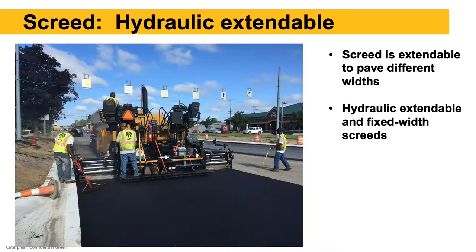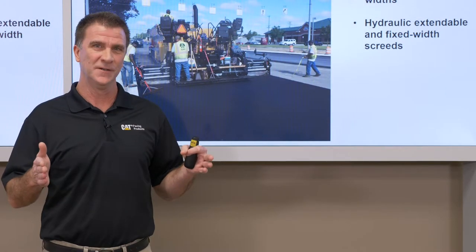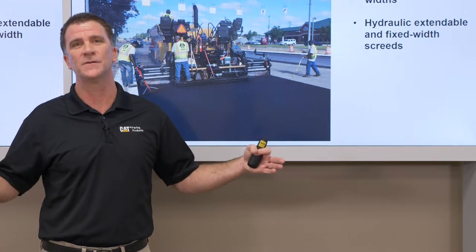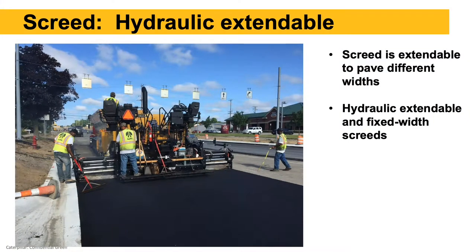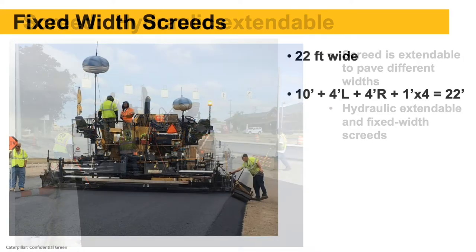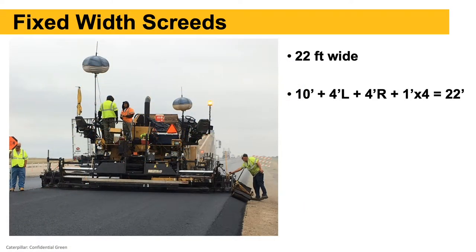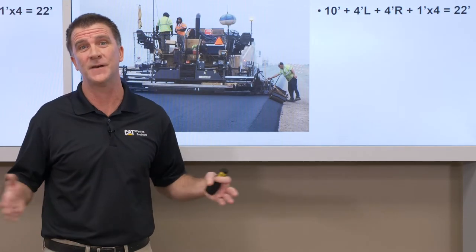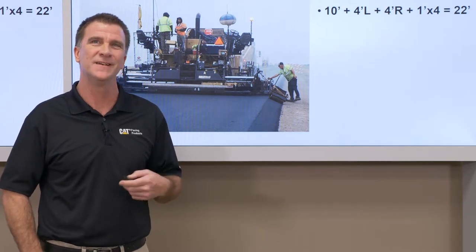The screed — mostly what we see today are hydraulic extendable screeds, which are extendable to pave different widths. They have a fixed base width. For highway or major roadways, they're either an 8-foot or 10-foot wide main screed with hydraulic extensions that can extend to various paving widths. Fixed width screeds have bolt-on extensions on the outer edges in different width sections — 1-foot or 2-foot — that can be bolted on, but once set up you can't vary that width while paving.